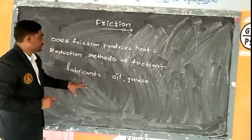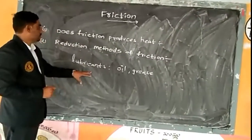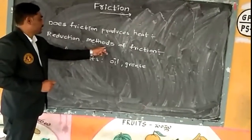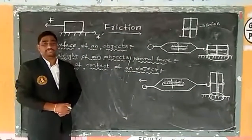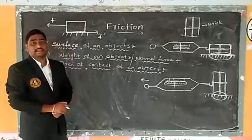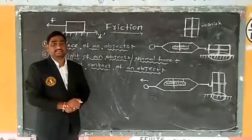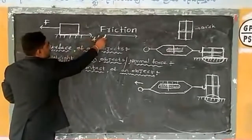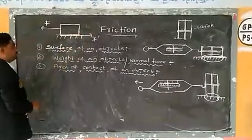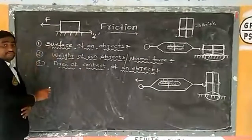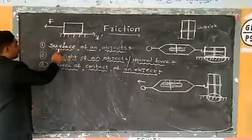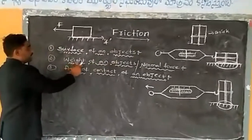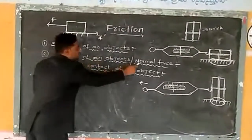These are the techniques we can use in order to reduce friction. Welcome to the physics class. In our previous class, we discussed the factors which can affect the rate of friction. The first factor is the surface of an object. The second factor is the weight of an object, or its normal force.